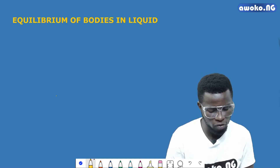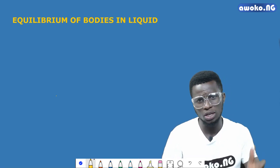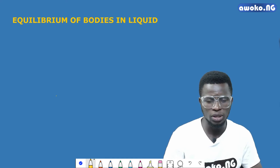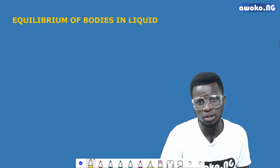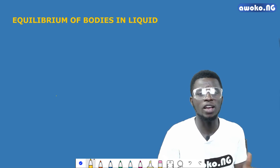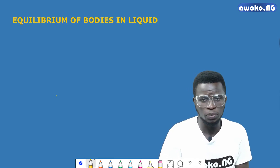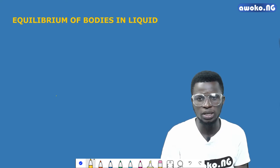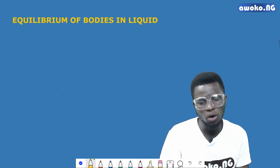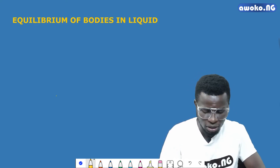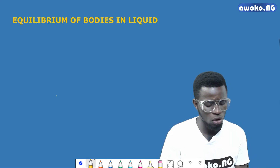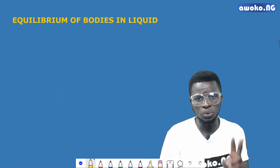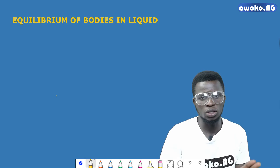Talking about the equilibrium of bodies in liquids, which is our topic for today's class. We discussed what equilibrium is in our previous lessons when we were discussing the equilibrium of forces. Equilibrium is a state of stability, a state in which all the forces acting on a body balance one another. To adequately explain the equilibrium of bodies in liquid, two principles will be looked into.